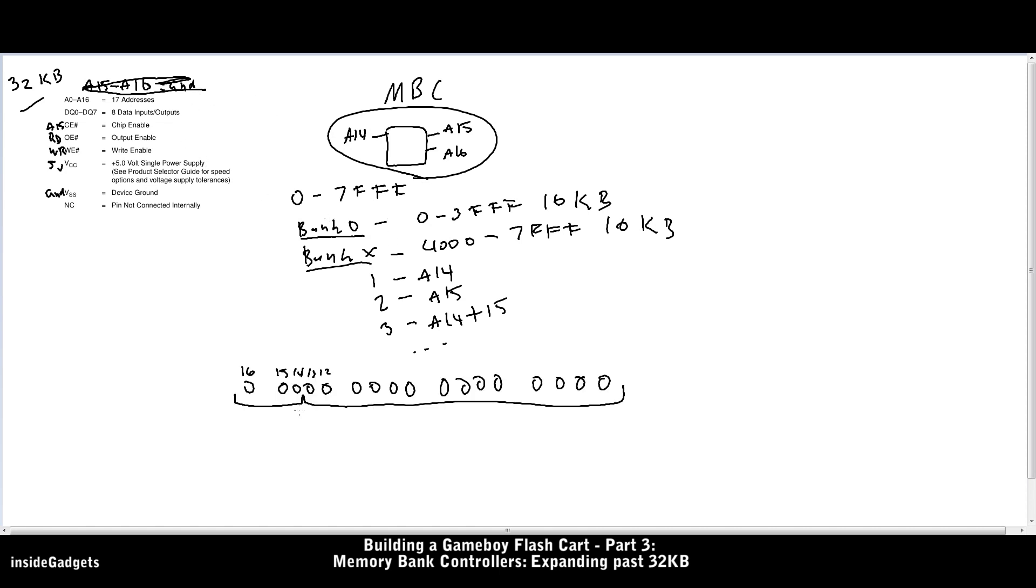So when we tell the MBC to change to bank 1, what we're doing is requesting 4000 to 7FFF. When we request bank 2, we're requesting the next 16 kilobytes, which is 8000 to BFFF. For bank 3, we turn both of those bits on and we're requesting C000 to FFFF, and so on.